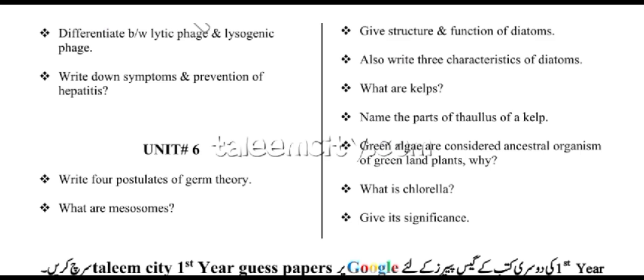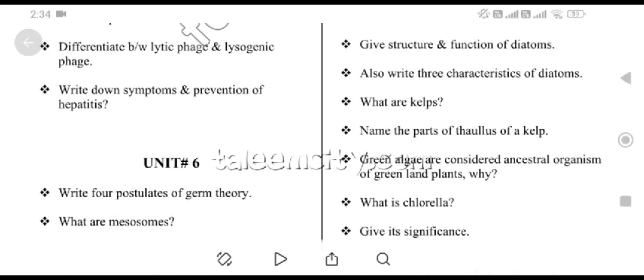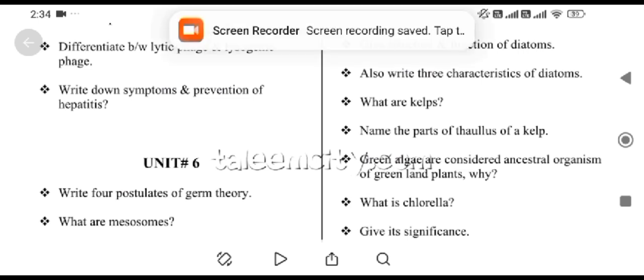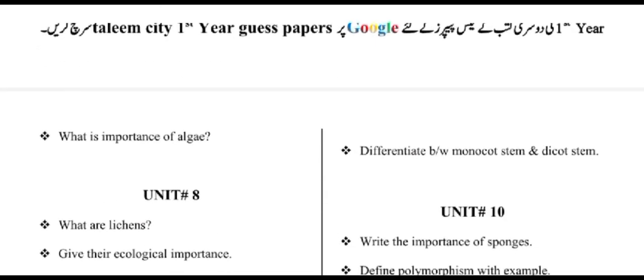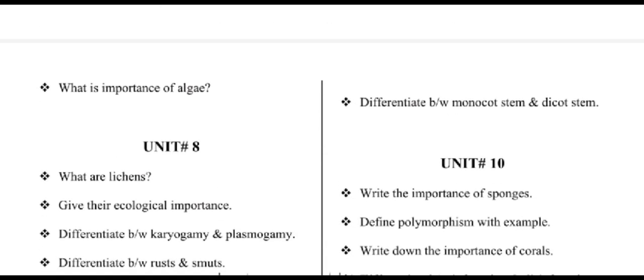Name the parts of thallus of a kelp. Green algae are considered ancestral organisms of green land plants — why? What is chlorella and its significance? Importance of algae.